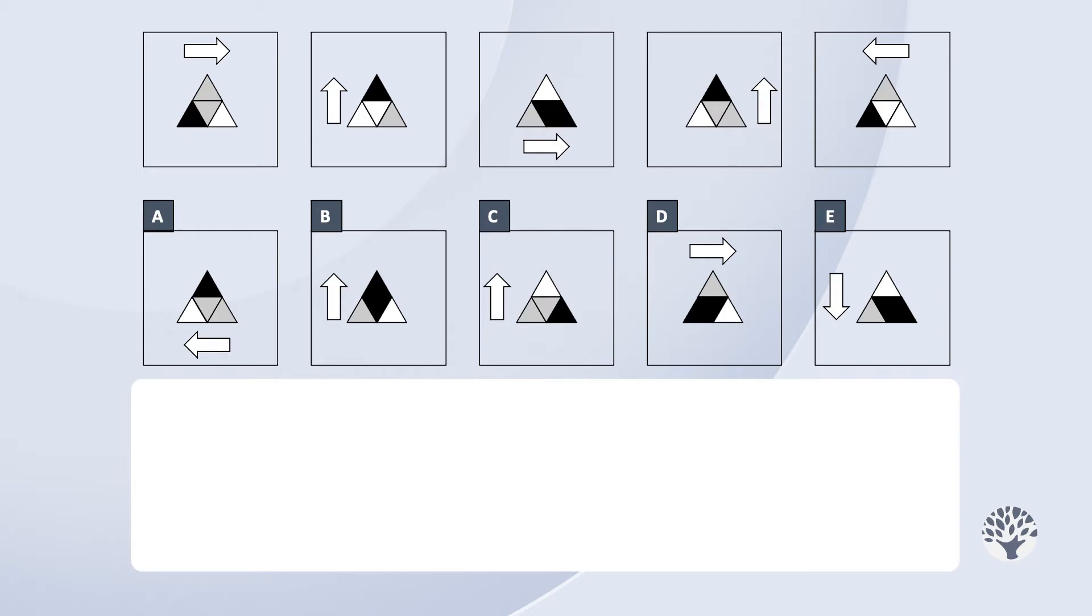Note that it has two attributes, position and direction. The arrow in the first frame is pointing to the right and positioned at the top.